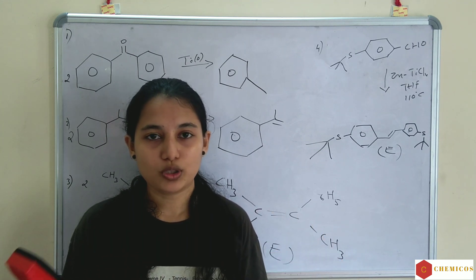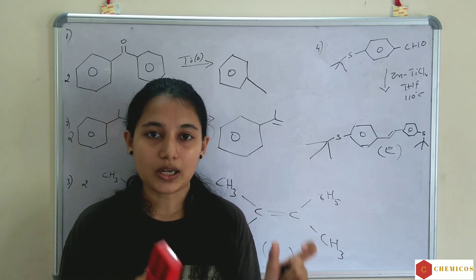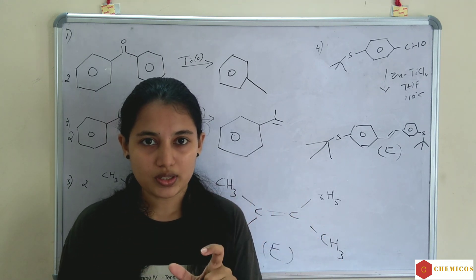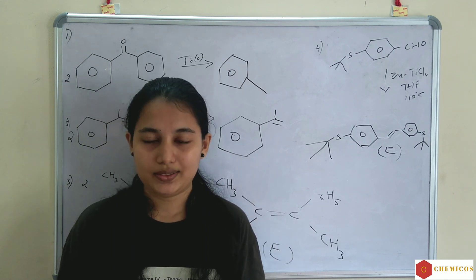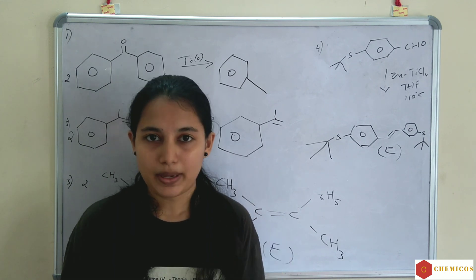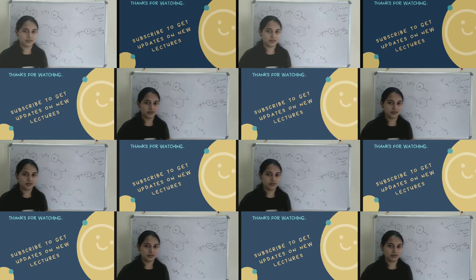So to summarize: McMurry coupling is the coupling of two ketones or two aldehydes to form an alkene using low-valent titanium as the reagent, with E-alkene as the major product.